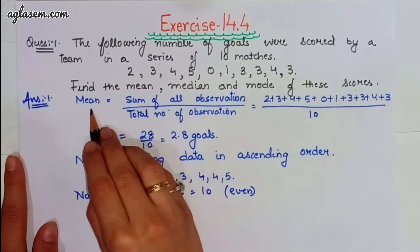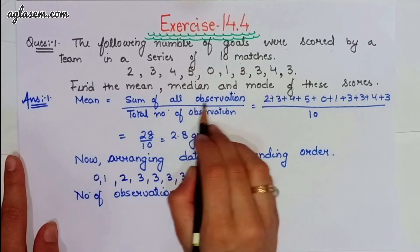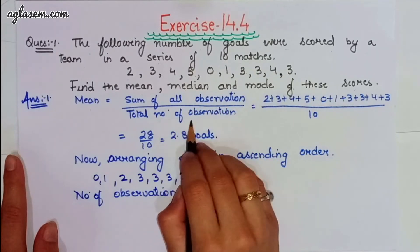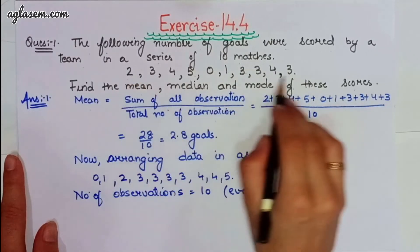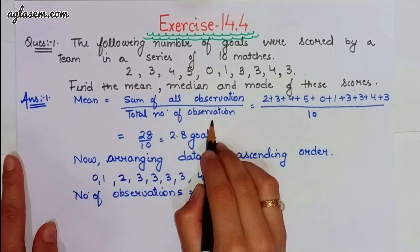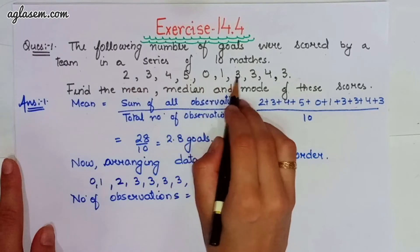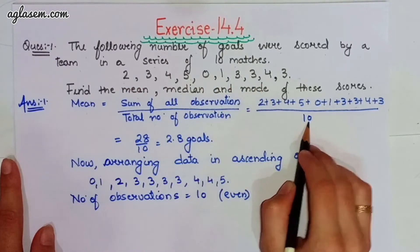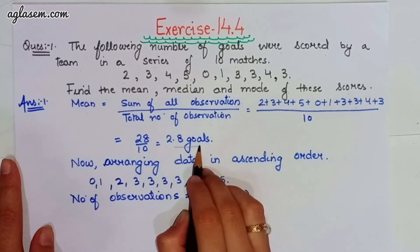The answer is, mean we can find as sum of all the observations divided by total number of observations. So, sum of all, that is, we have to add all these. And total number of observations is 10. So, we have to divide it and we will get 2.8 goals.